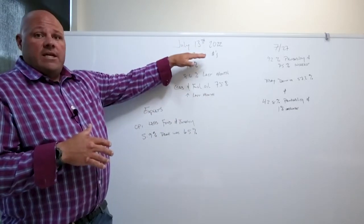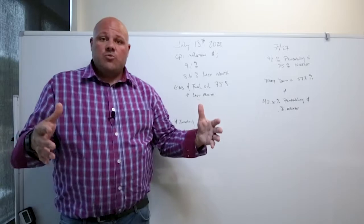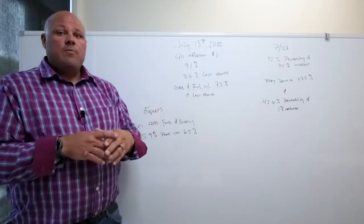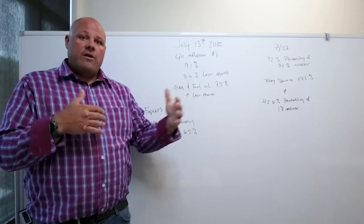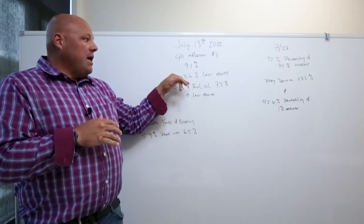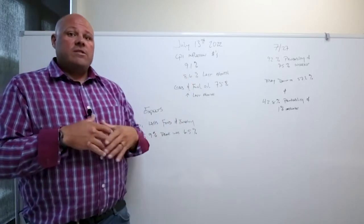Today, the Consumer Price Index inflation numbers were released on July 13th. What they showed was a 9.1% increase in our inflation number, which is up from last month. Last month was 8.6%.